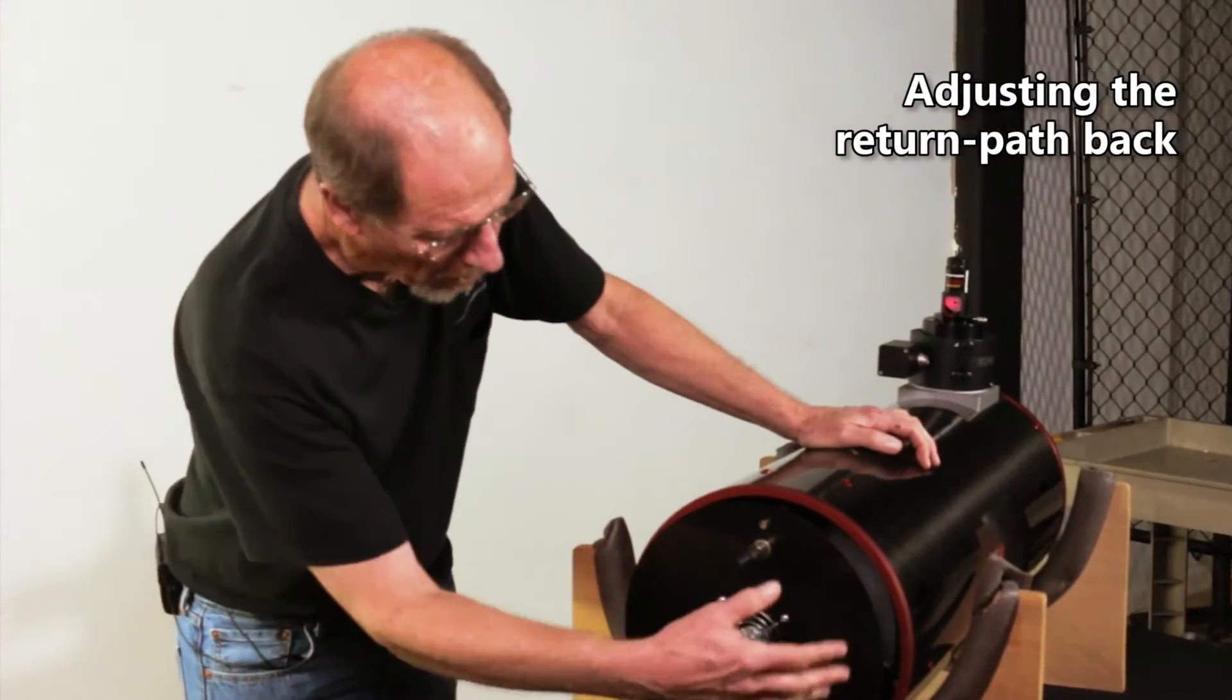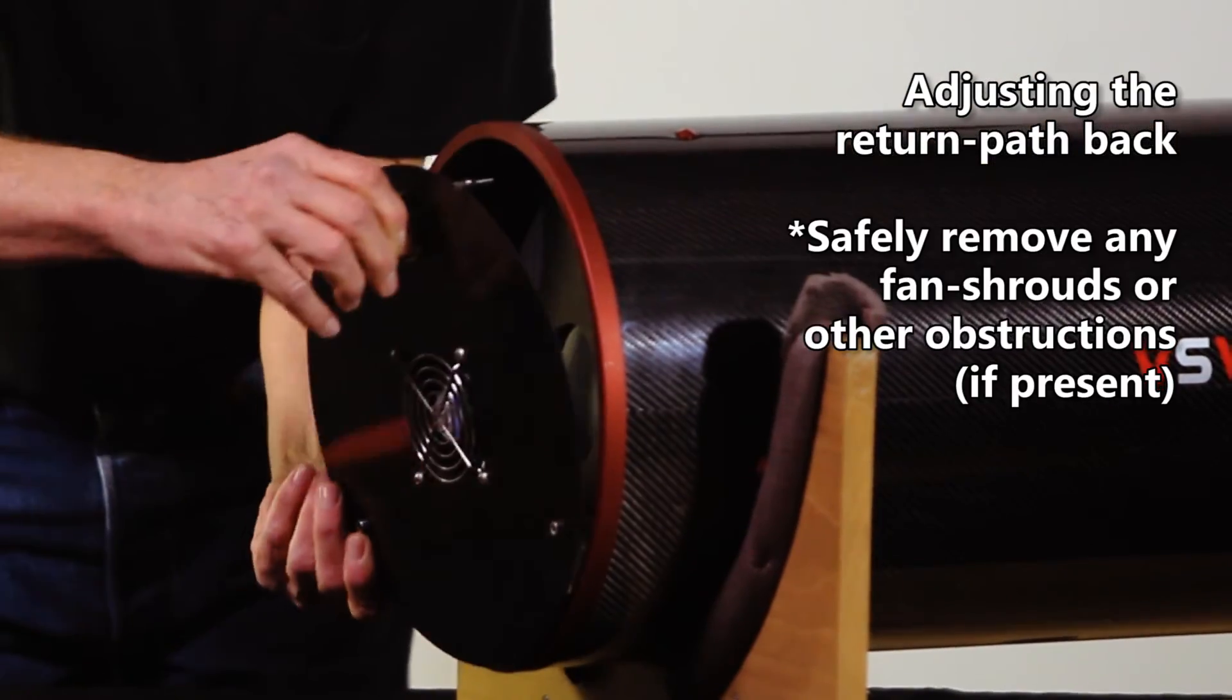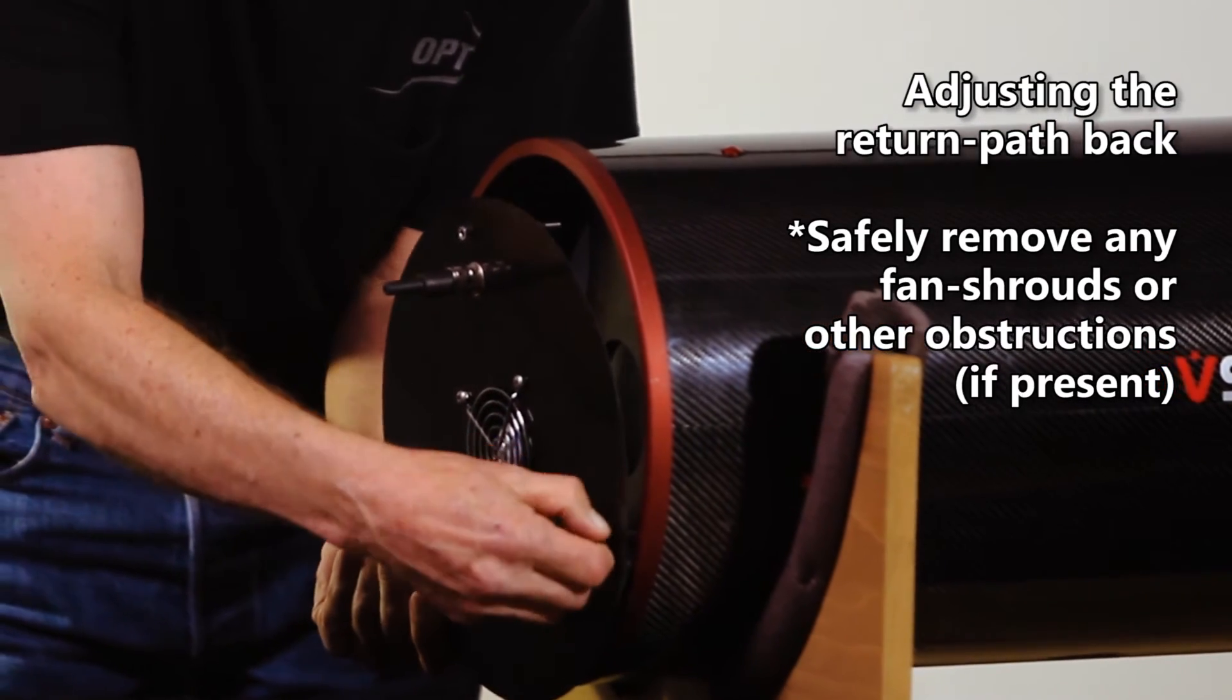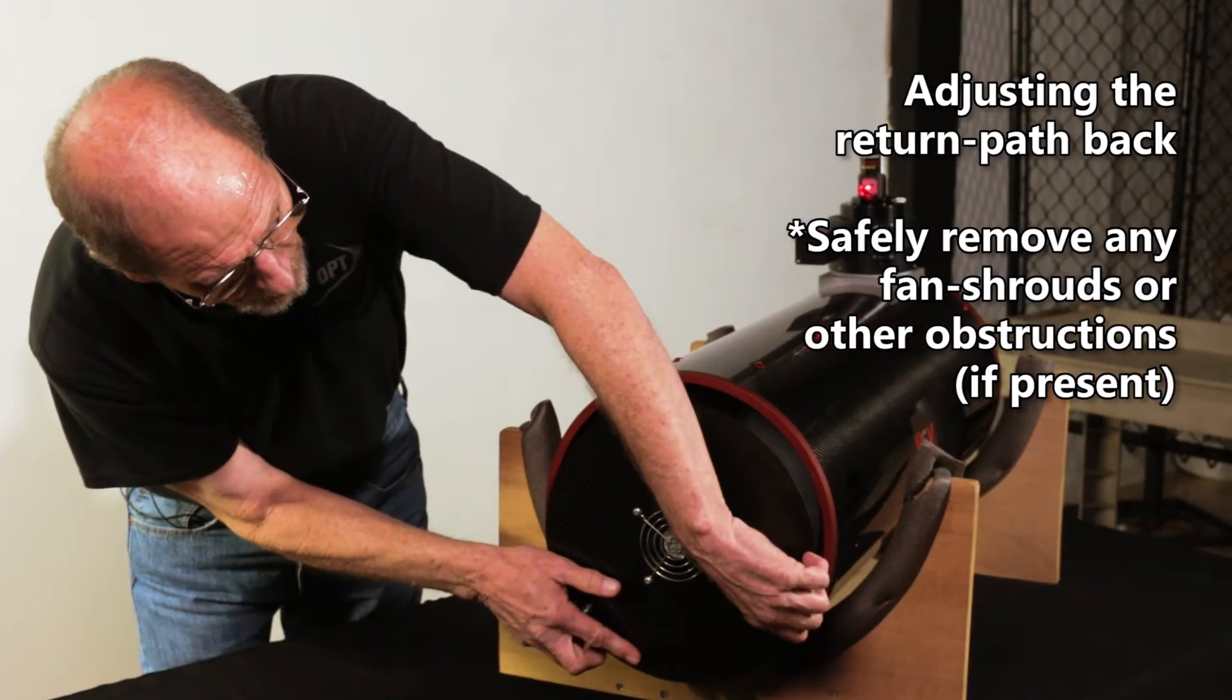Okay, the ASA has a small fan shroud on the back. You want to remove that. Every scope is a little bit different on how the collimating screws are adjusted on the primary mirror.